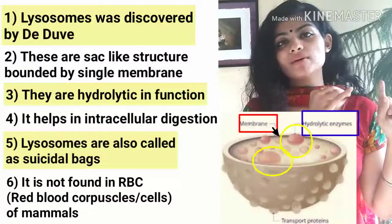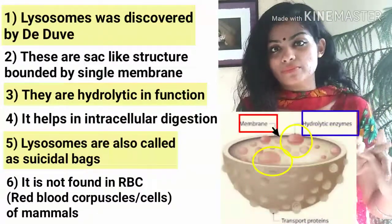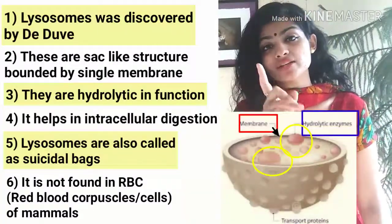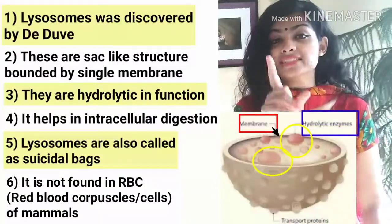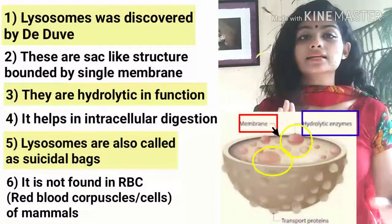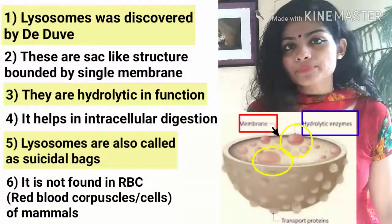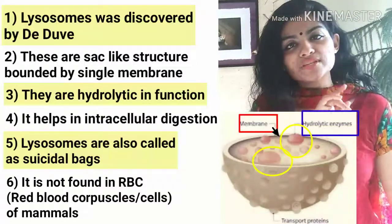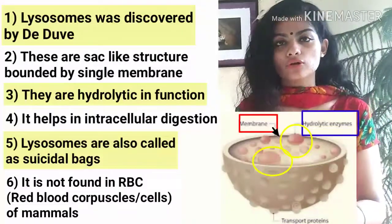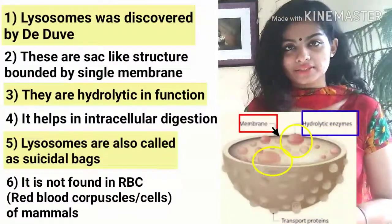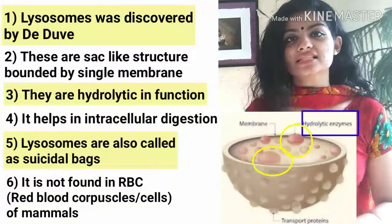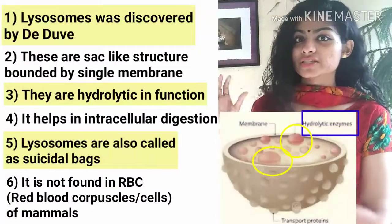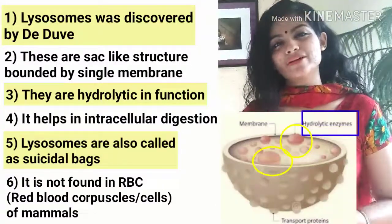Mitochondria and chloroplast are both double membrane-bound, and ribosome does not have any membrane. But lysosome is a single membrane-bound cell organelle. Since it is membrane-bound, it is present in eukaryotic cells but is absent in prokaryotes. Where exactly is lysosome present? It is present in the cytoplasm of the cell.